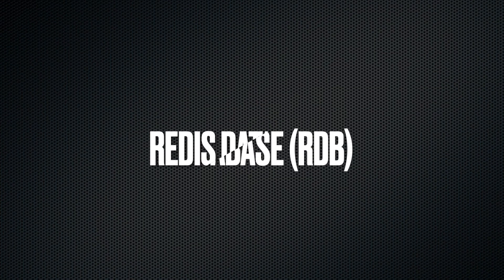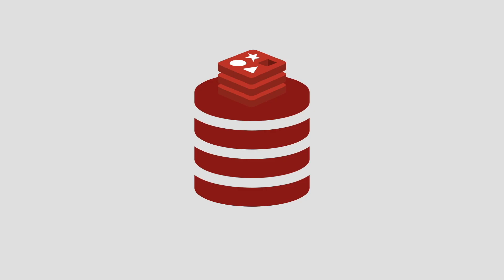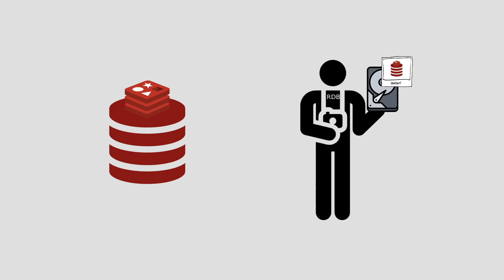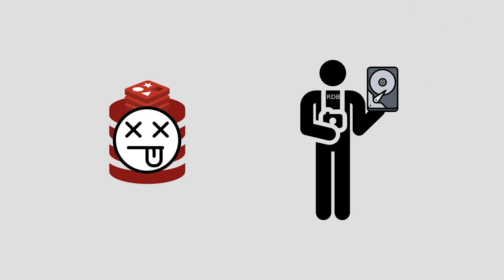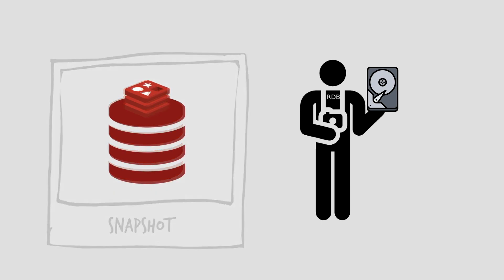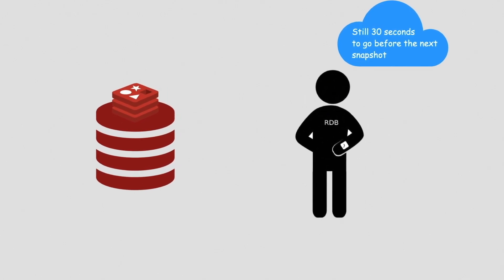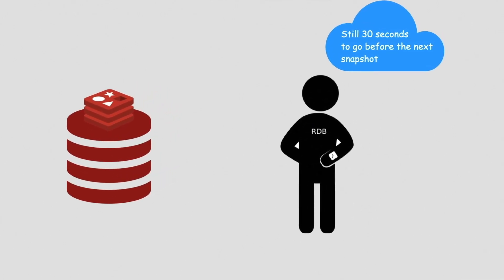Now that we have our Docker container working as expected, let's go through the content you've all been waiting for. Redis Database, or RDB, is a persistence mechanism in which the database persists data to disk as snapshots. If the server instance goes down, the snapshots can then be used to restore your previous database state. The interval at which snapshots are taken can be configured — for example, every one minute if 10 changes have happened, or every 5 minutes if 1,000 changes have happened in the dataset.